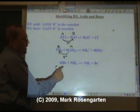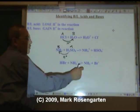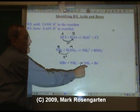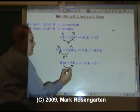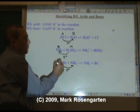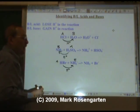In this reaction, the HBr becomes Br-, and NH2- becomes NH3. Well, HBr lost a hydrogen, and NH2- gained a hydrogen. So the hydrogen went from HBr to NH2-, making the HBr the Brønsted-Lowry acid, and the NH2- the Brønsted-Lowry base.